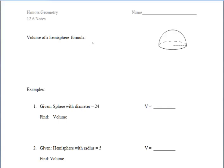For the second set of notes in section 12.6, you are going to work through the following example problems on your own. We already derived the fact that the volume of a hemisphere is 2 thirds pi r cubed, so we can write that there and move on.